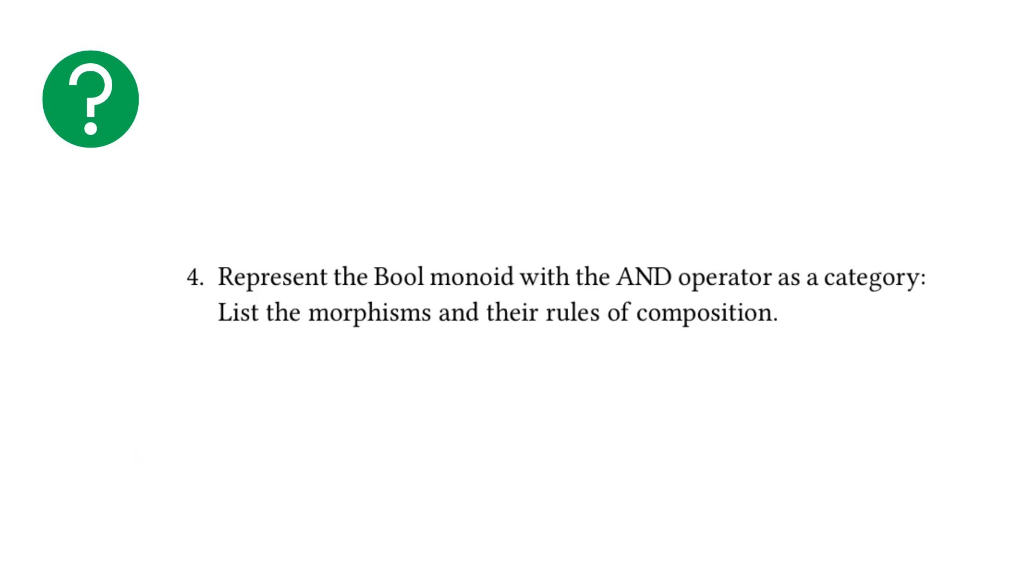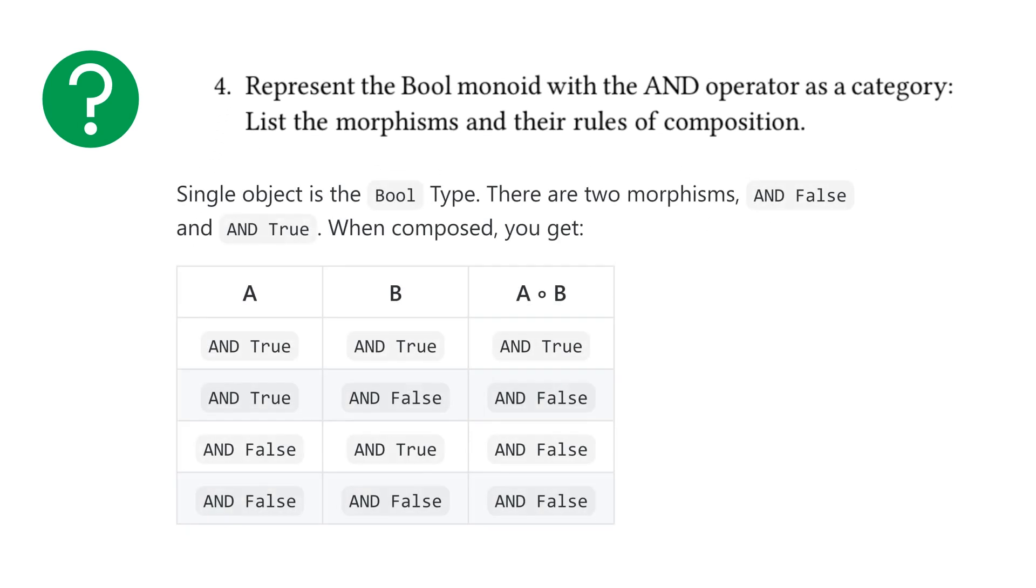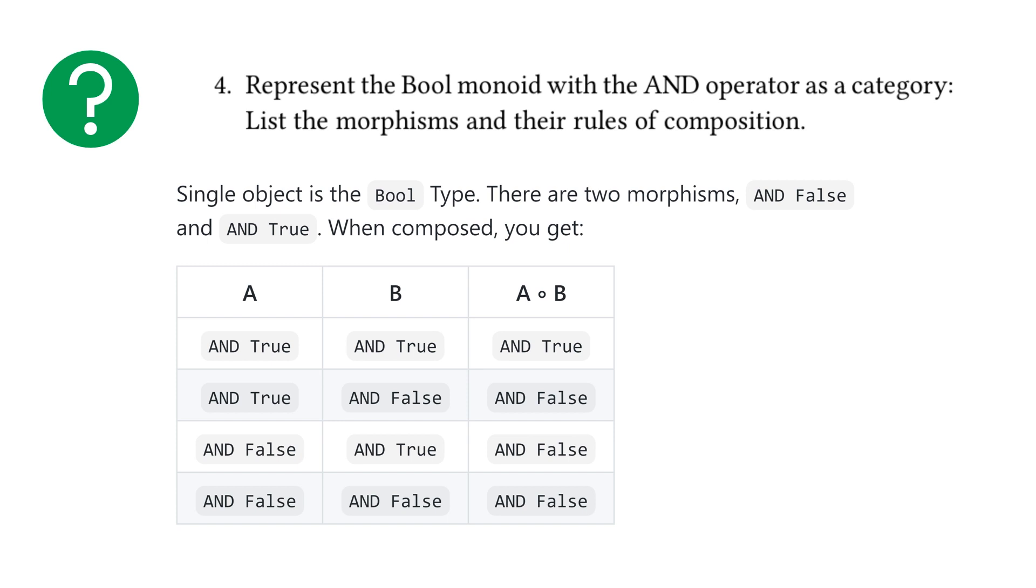Moving on to our second last exercise, number four, represent the bool monoid and the and operator as a category. List the morphisms and their rules of composition. So here I just created a simple table and put a short statement. The single object is the bool type. There are two morphisms and false and and true. When composed, you get the following. So and true and and true gives and true. And then and false with anything else gives you and false pretty straightforward. And if you represent this using our little object and morphism diagrams, you get the following. So and true is the identity arrow and and false is the other arrow. And whenever you compose anything other than and true the identity with itself, you're going to end up with the and false arrow.